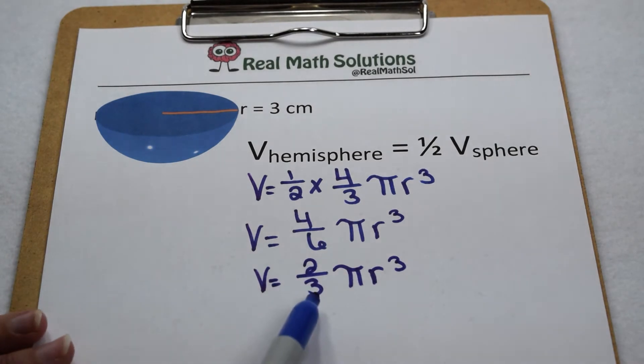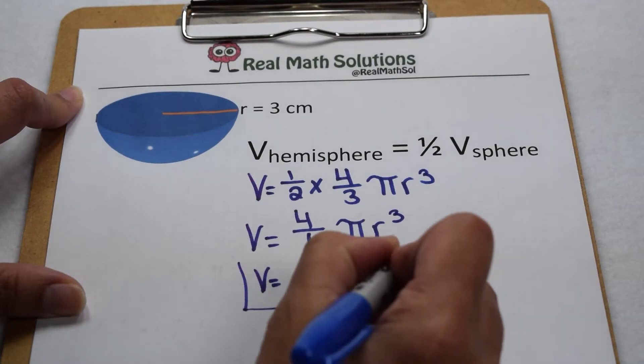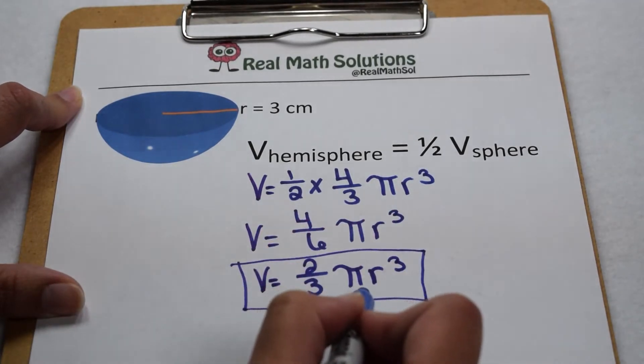That's as far as we can go with simplifying this equation. So if we want to find volume of a hemisphere directly, we can solve two-thirds times pi times radius cubed.